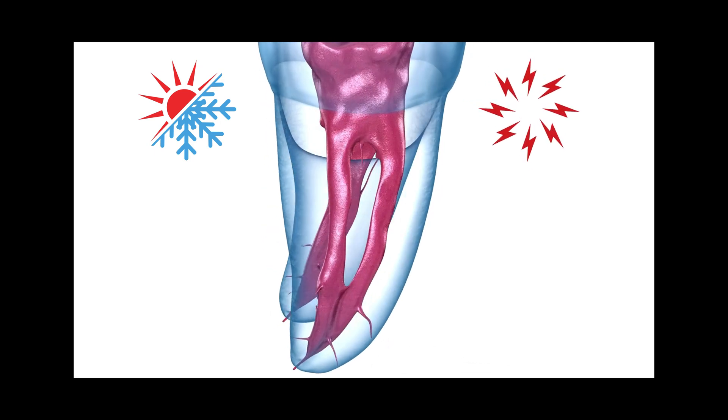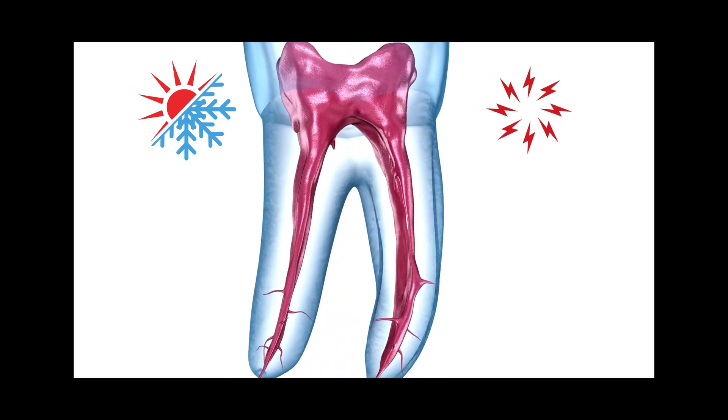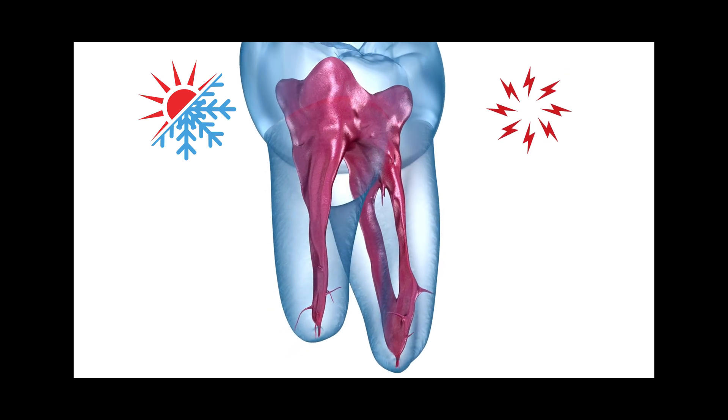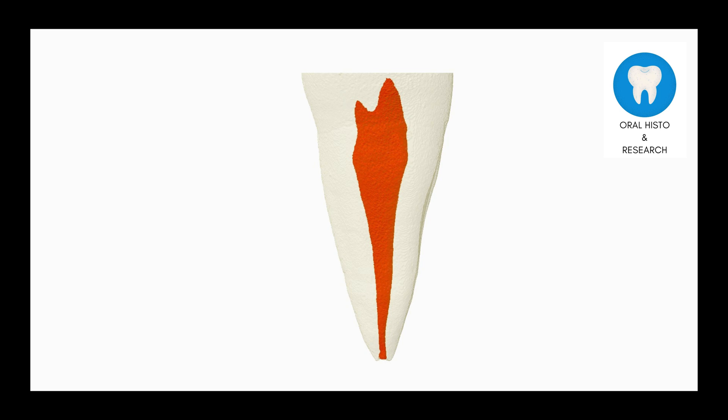As the dental pulp is a highly vascularized and innervated region of the tooth, it is the site of origin for most pain-related sensations. Dental pulp is present in both the crown and root part of the tooth. In this micro-CT image, you can see how dental pulp appears if the tooth has two roots, and in this image, you can see its appearance in a single rooted tooth.